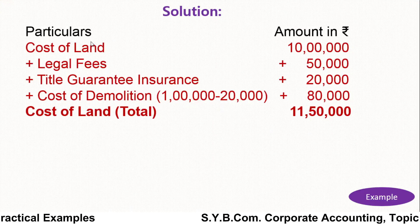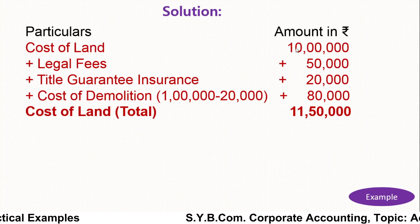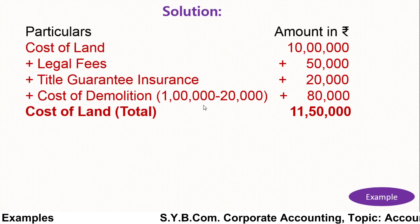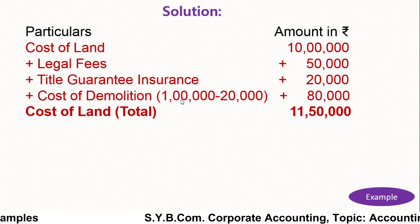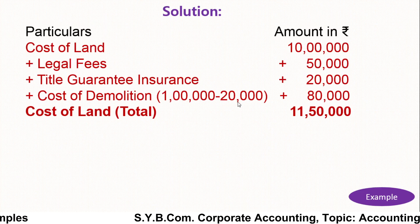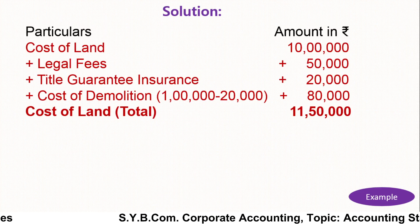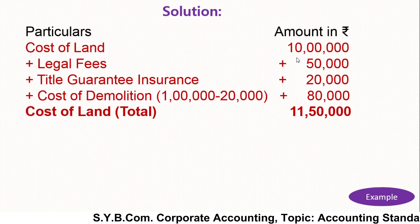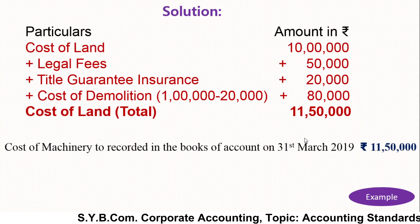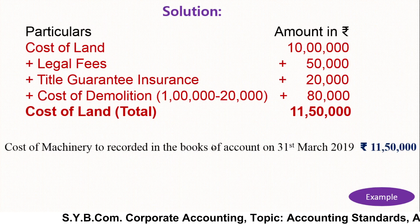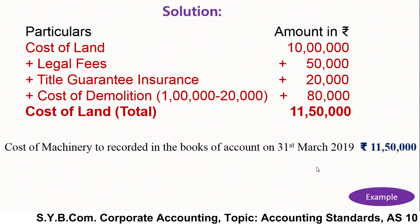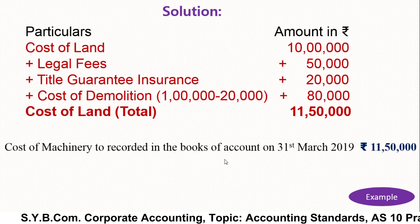In the solution, the particulars are: cost of land Rs. 10 lakh, legal fees Rs. 50,000, title guarantee insurance Rs. 20,000, and cost of demolition Rs. 80,000 — because the demolition cost was Rs. 1 lakh but Rs. 20,000 received from sold material is deducted, leaving Rs. 80,000 to be added. Therefore, the cost of land to be recorded in the books of account on 31st March 2019 is Rs. 11,50,000. In this way you can calculate the cost of asset.